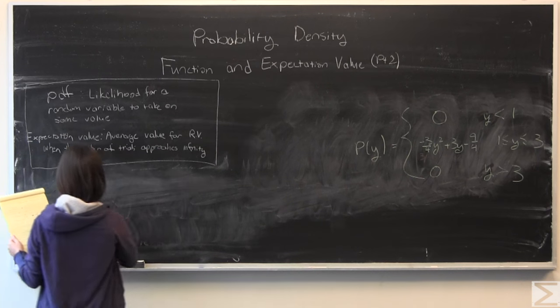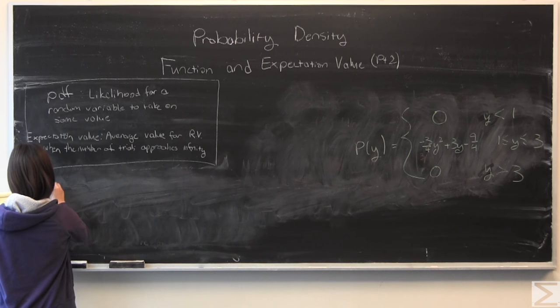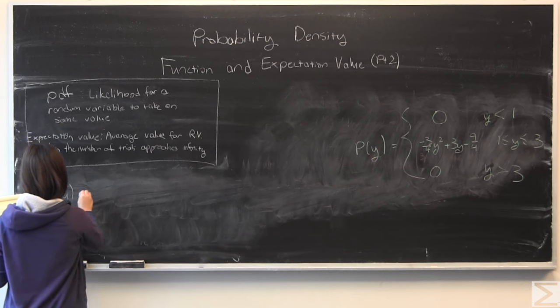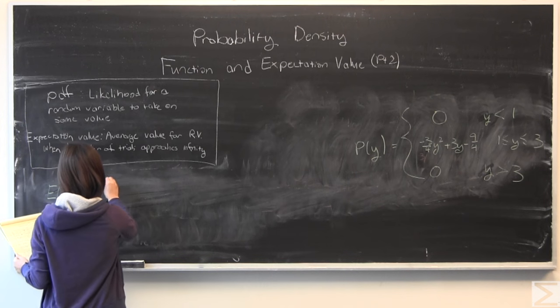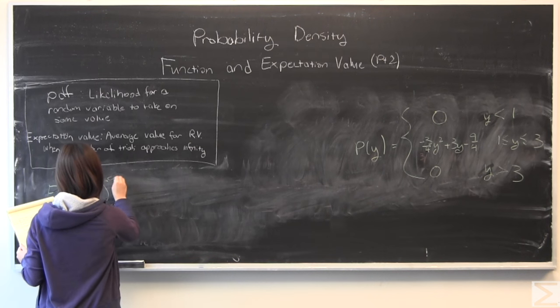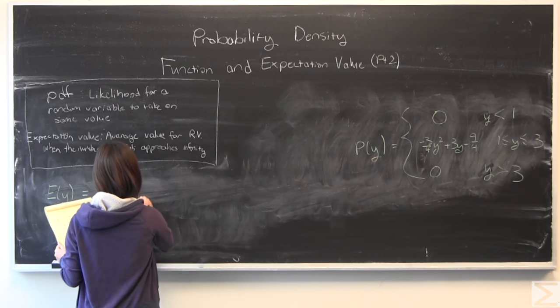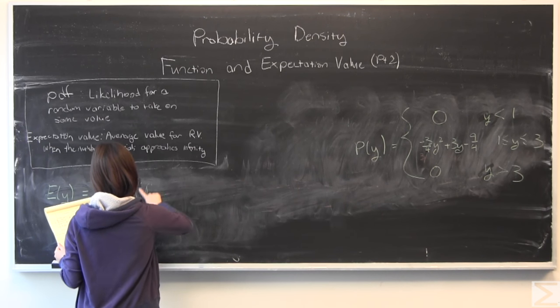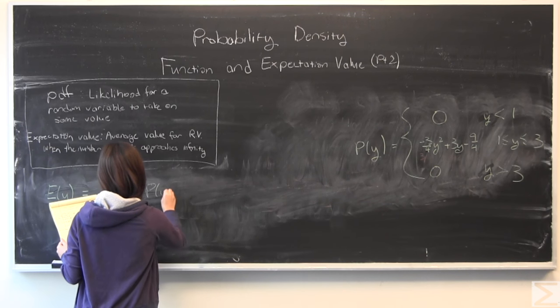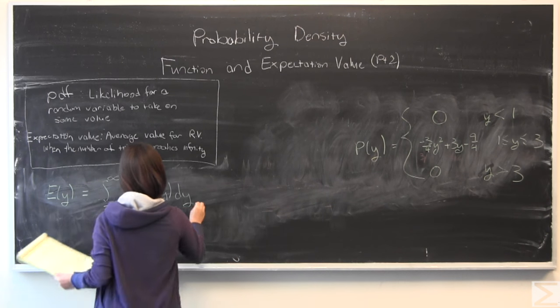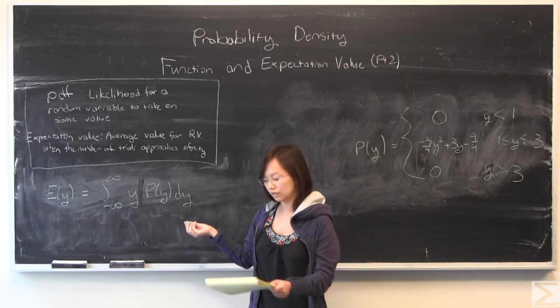How tall do we expect our plant to grow, assuming it is average, and we took good care of the plant and did not do anything that made it not fall within the average? For a continuous variable, we're going to be using an integral.